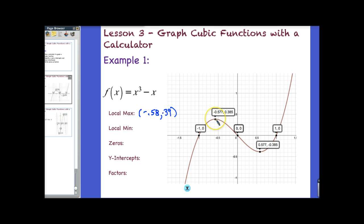That's my local max. And again, sometimes if you have a, this is a cubic, but if you had a quartic, you might have two of these. Okay, so my local min on this one is going to be 0.58 comma negative 0.39. Interesting, the symmetry. These are the same, really, right, except for one's positive, one's negative.